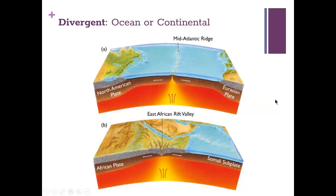Divergent boundaries are when two plates move away from each other. Here, the North American Plate is being pushed away from the Eurasian Plate, and in the center the Mid-Atlantic Ridge is forming new oceanic crust. Divergent boundaries can also occur on continents — the East African Rift Valley is a zone of spreading on land, pushing the African Plate away from the Somali Plate.